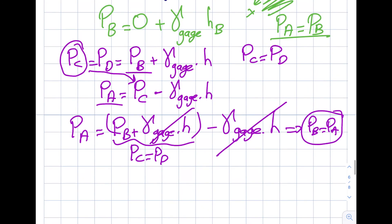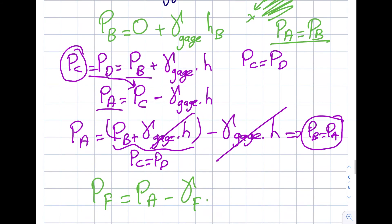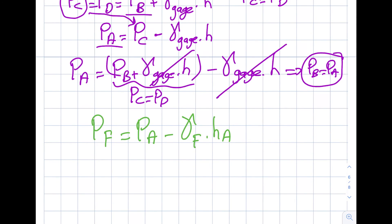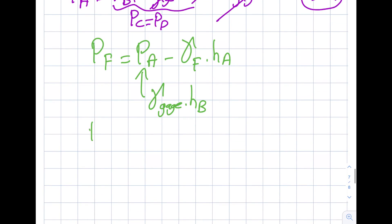Let's call the point of interest point F. Then P_f equals P_a minus the specific weight of the fluid F times the height h_a, because I'm going up. Since P_a equals P_b, and P_b equals specific weight of the gauge fluid times h_b, I can write: P_f equals specific weight of the gauge fluid times h_b minus specific weight of the fluid of interest times h_a.